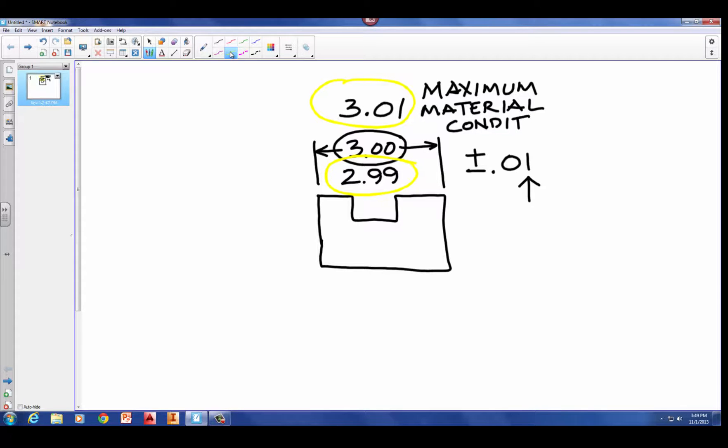And this is abbreviated as MMC. And whenever we see it in a feature control frame in a dimension, which we'll talk about later, we might even see it in a circle with just an M like that. It all means the same thing. Maximum material condition, MMC, or this circle with an M inside of it.